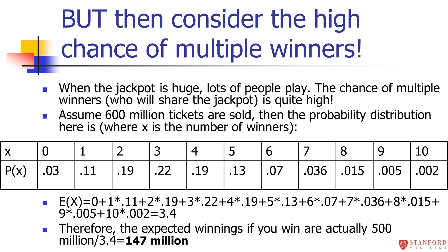Using this probability distribution, I calculated the expected number of winners: if 600 million tickets are played, the expected number of winners is 3.4. So you're actually expecting multiple winners. And indeed, in that particular Mega Millions week, there were actually three winners — the expected value bore out almost perfectly. So the expected winnings isn't really $500 million, because we're expecting to split the pot among 3.4 people. Dividing $500 million by 3.4 gives roughly $150 million that you're actually expecting to win.